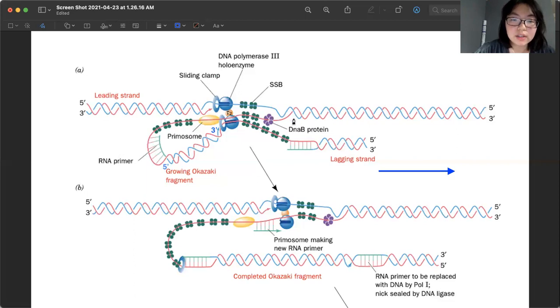And initially, as it unwinds, we have the SSBs on the single-stranded parts to prevent it from pairing and all of that, and to prevent any like religating and stuff like that.